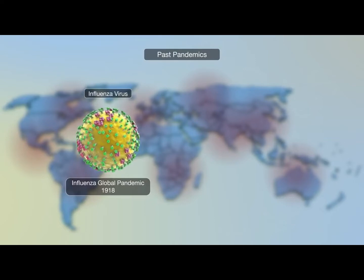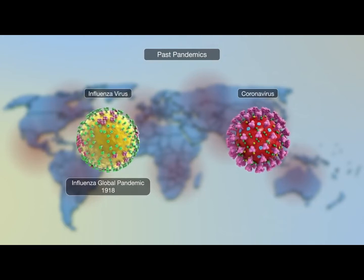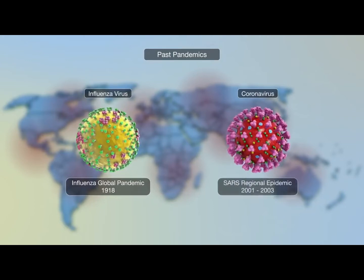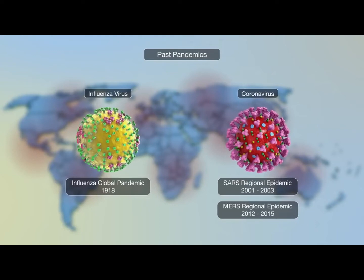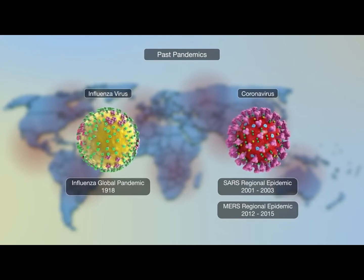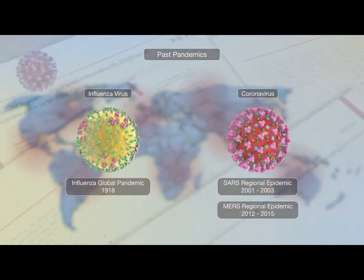While no global pandemic has been born from the family of coronavirus, two regional epidemics have resulted from this family of viruses. They include Severe Acute Respiratory Syndrome, or SARS, and Middle East Respiratory Syndrome, or MERS, in 2001 to 2003 and 2012 to 2015 respectively, and resulted in over 1,500 deaths.